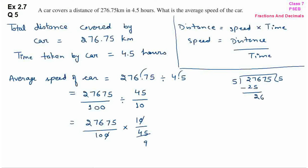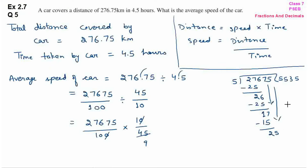Continuing the division: remainder 2, bring down 6 → 26; remainder 1, bring down 7 → 17; remainder 2, bring down 5 → 25. So 27675 ÷ 5 = 5535. And 45 ÷ 5 = 9. So we now have 5535/9.